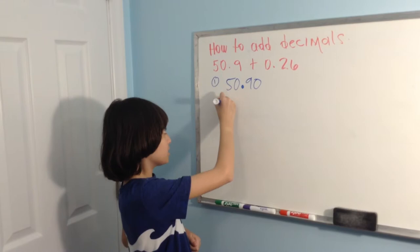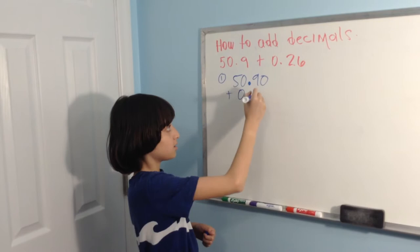9 - you can add a zero. Now, plus. The zero must go over here: 0.26.